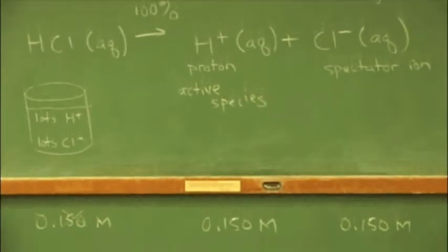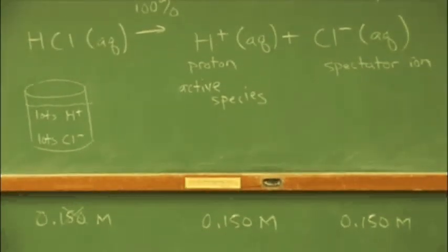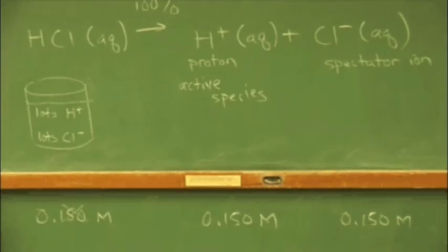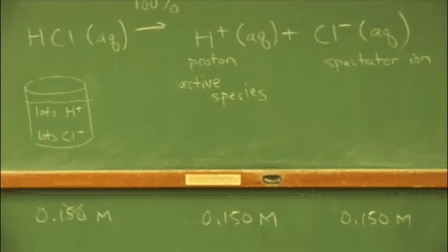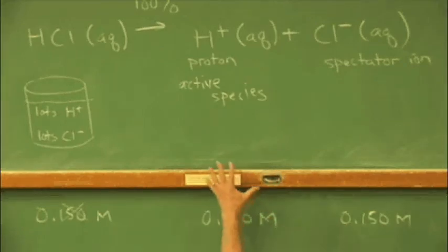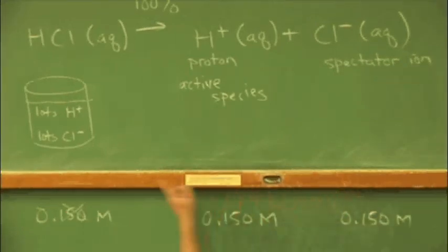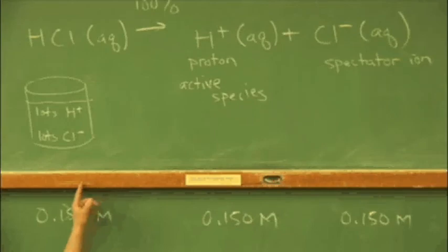We might take a look at the math for just a moment and be confused going, well, how can you get 0.150 molar of each of these from one of those, and it's very simple to explain. Every time one of the HCl busts up, it breaks up into two pieces. So we're getting smaller pieces, proton, chloride, and we do have this effect like a banana.